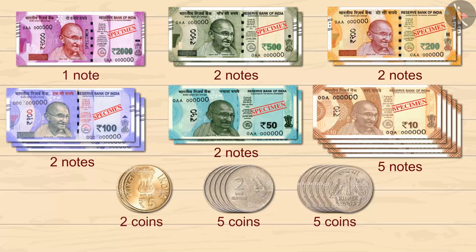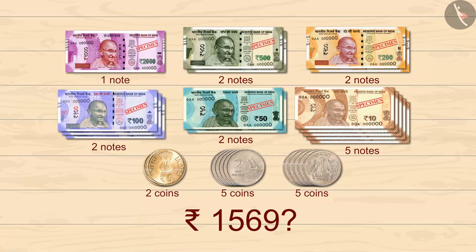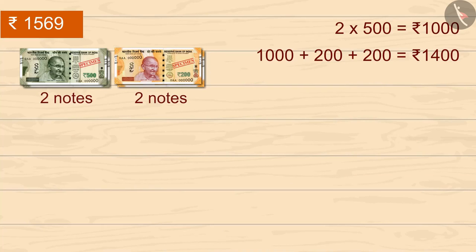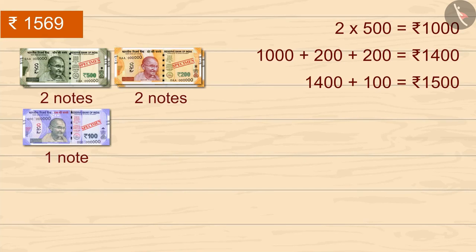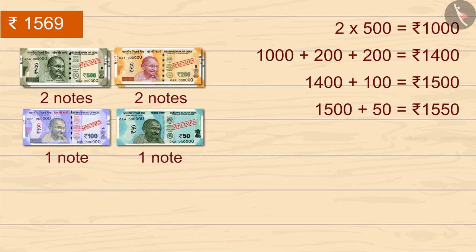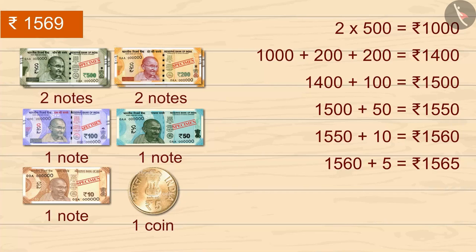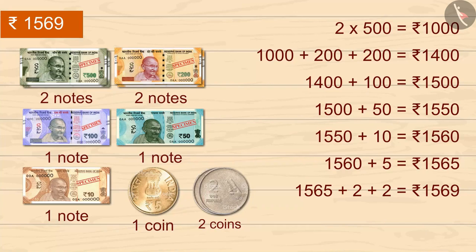That is ₹1,569, Grandpa. Okay, look. I have these many notes and coins with me. How would you make 1,569 out of these? 1 minute, Grandpa. So, we have to make 1,569. First, we'll take 2 notes of 500 — that makes ₹1,000. Then 2 notes of 200 each, so 1,000 and 400 gives ₹1,400. Then 1 note of 100, making ₹1,500. 1 note of 50, so it becomes ₹1,550. 1 note of 10, so it becomes ₹1,560. 1 coin of 5, so it becomes ₹1,565. And 2 coins of 2 rupees — now it becomes a total of ₹1,569.